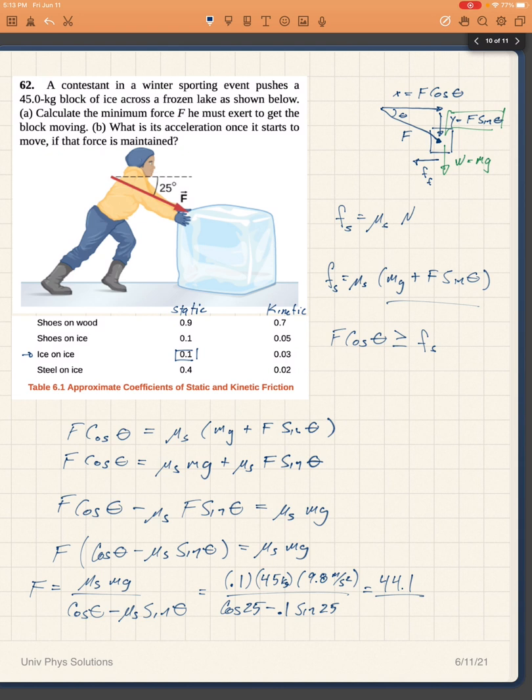The denominator is cosine of 25 minus 0.1 times the sine of 25. My units here obviously are kilograms meters per second squared which are newtons, and that gives me 51 newtons.